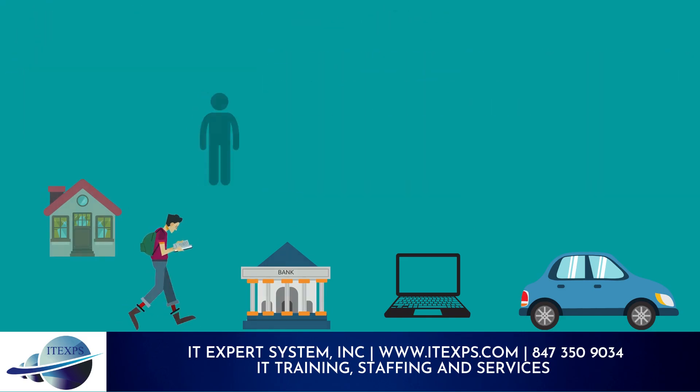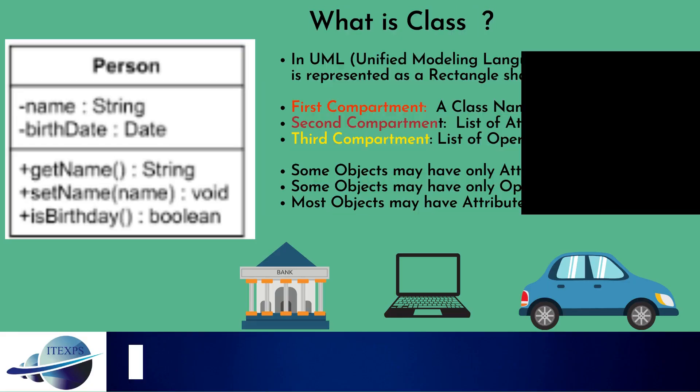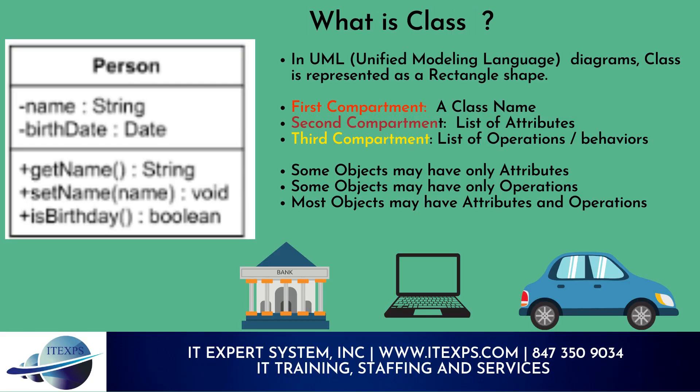In UML (Unified Modeling Language) diagrams, a class is represented as a rectangle shape. The first compartment holds the class name, the second compartment lists attributes, and the third compartment lists operations or behaviors. Some objects may have only attributes, some only operations, and most have both attributes and operations.